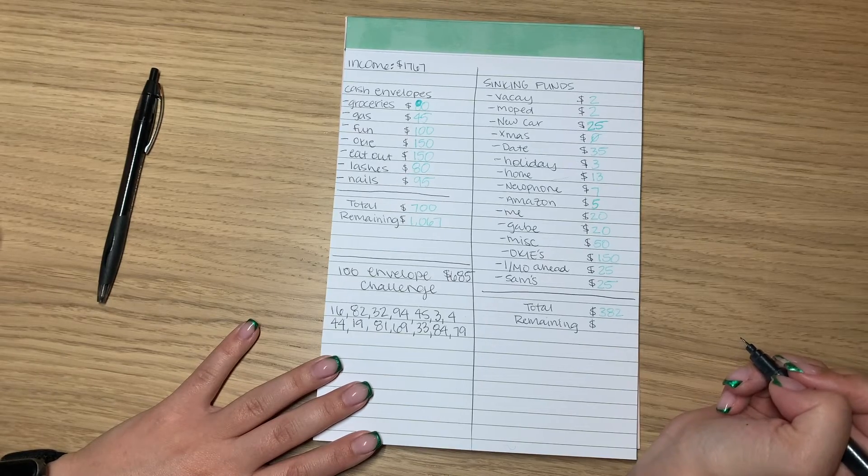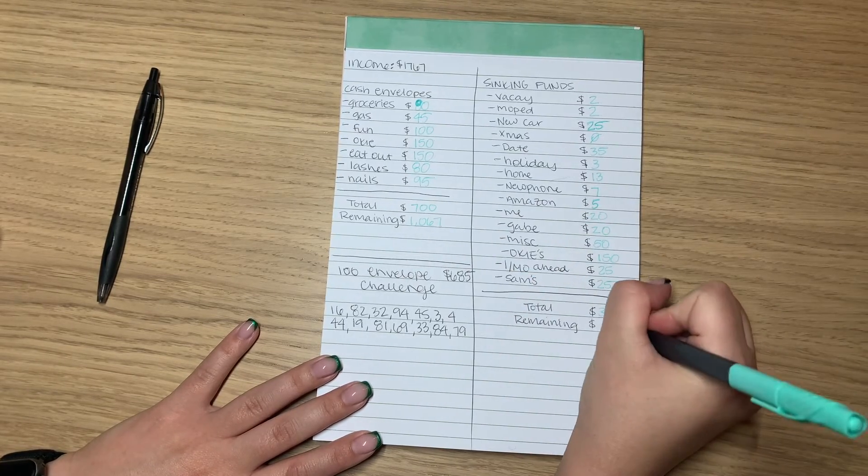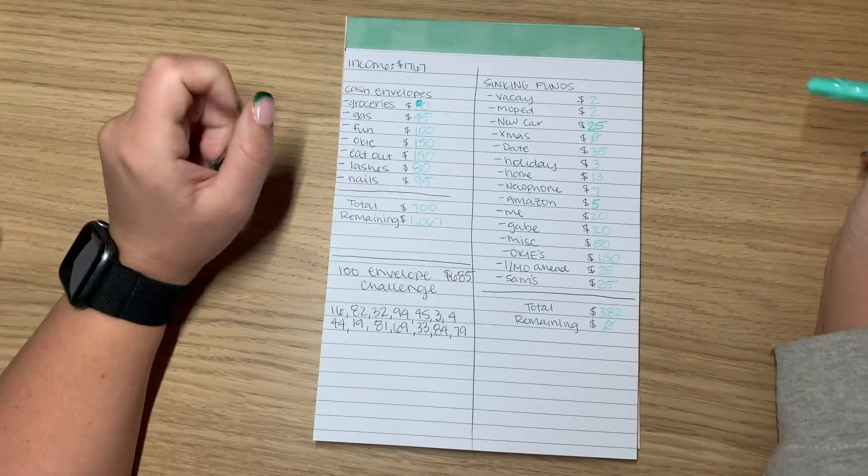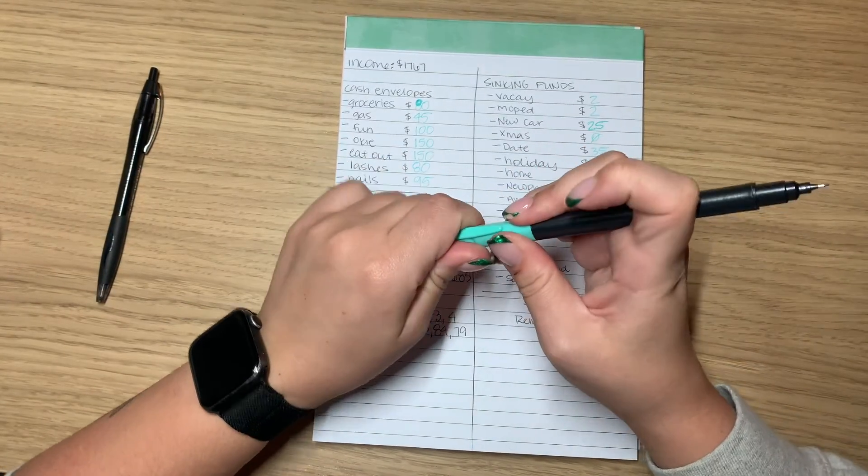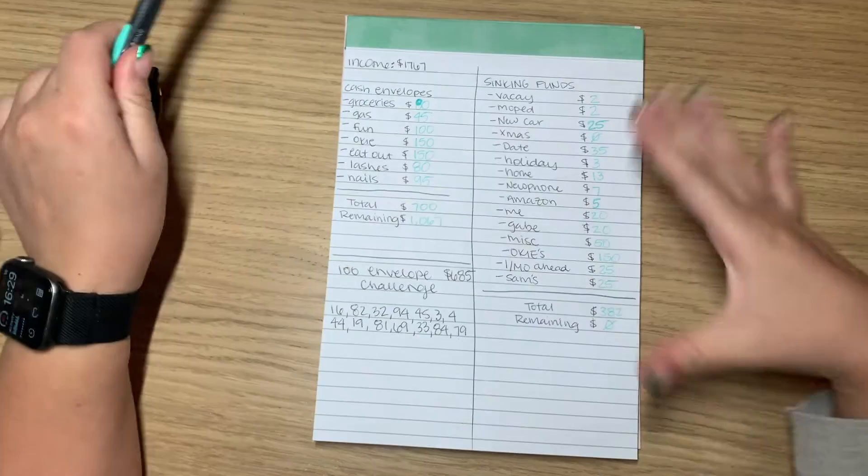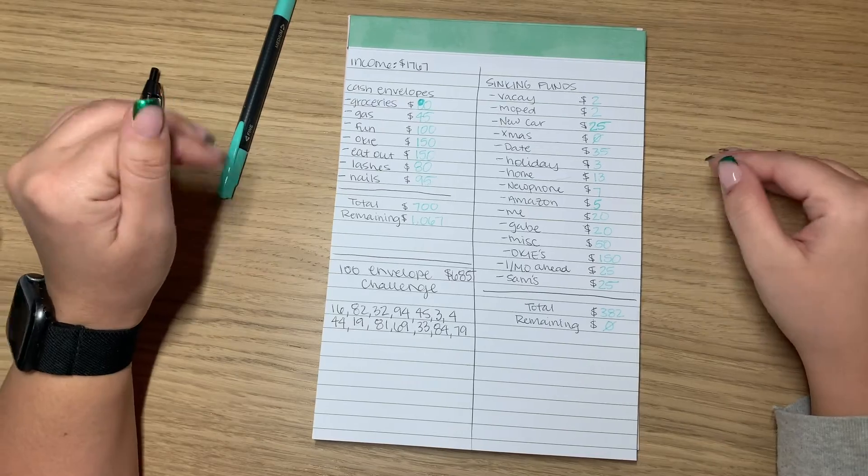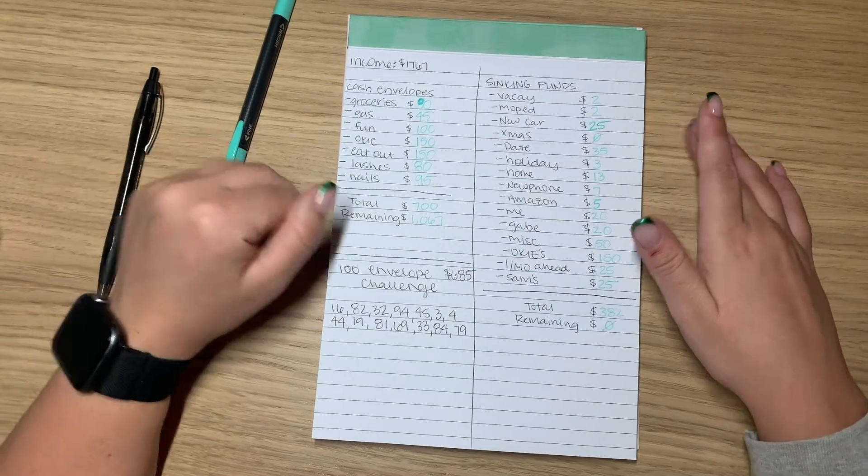And then after all of this is added up, I should have zero. Again, I don't have calculator. So anyway, that is all for this video. I just wanted to show you how I break down everything. So I'll see you tomorrow when I stuff my envelopes. Bye.